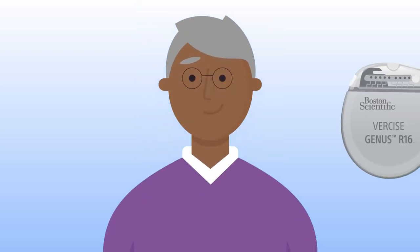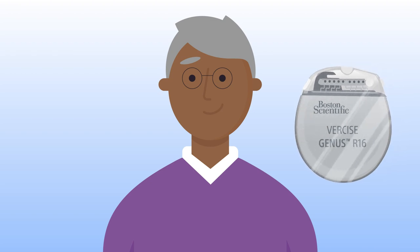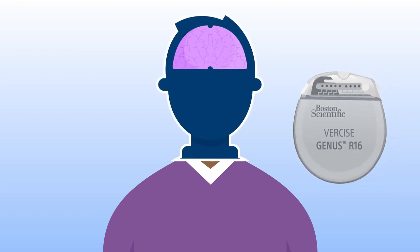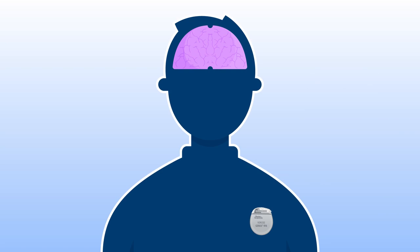It works by implanting a small pacemaker-like device called an implantable pulse generator, or IPG, typically under the skin in the chest. The IPG sends mild electrical pulses to a specific region of the brain through insulated wires called leads, helping to manage your symptoms.